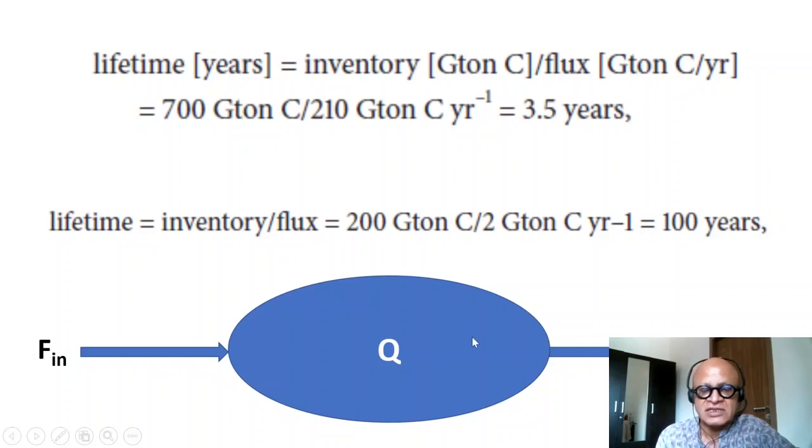The formal definition looks like this. You have a reservoir with storage of Q and there is an influx and there is an outflux. In a steady state, the residence time would be just Q divided by F in or F out because they would be the same in equilibrium.